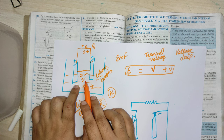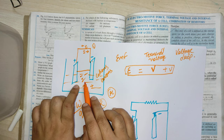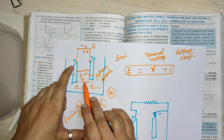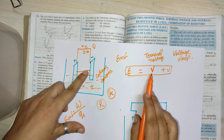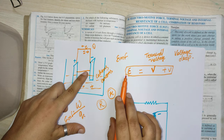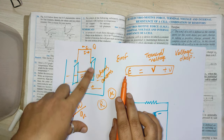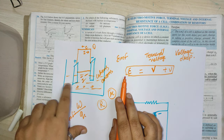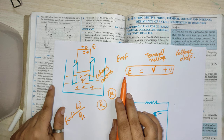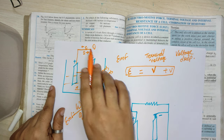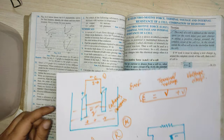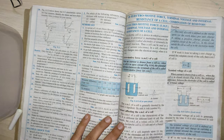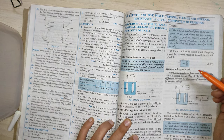The work done to fight against the internal resistance of the cell is the voltage drop, and the work done per unit charge outside the circuit is also a voltage drop component. EMF is the total work done — both outside and inside — to take a charge around the complete circuit.